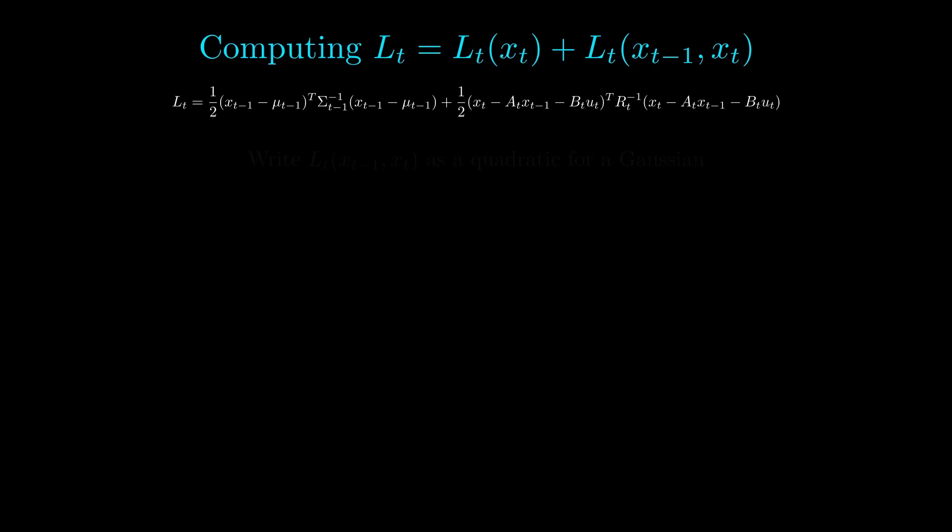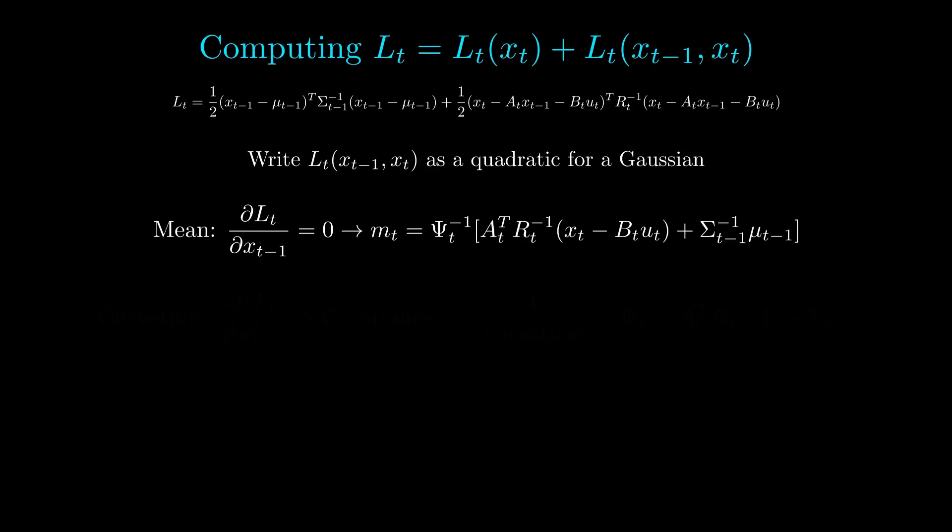So we want to take this Lt term and write it as a quadratic function for Xt minus 1. To find the mean of the distribution, we want to find where the lowest point of the quadratic is. So we apply simple calculus and take the derivative, set it equal to 0, then solve. The curvature is defined as the second derivative, and the covariance of such a quadratic is minus 1 over the curvature.